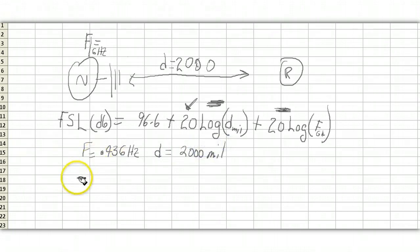So we'll plug this in so that the free space loss is equal to 96.6 plus 20 times the log of 2,000 plus 20 times the log of 0.43. If you do the math, this says that the loss is minus 155 dB.